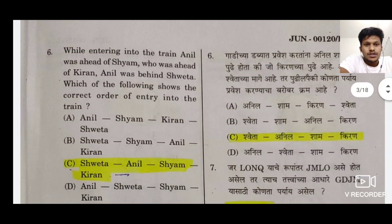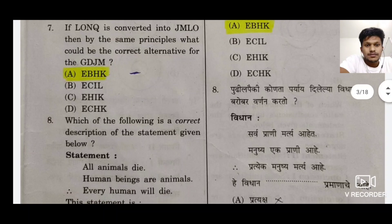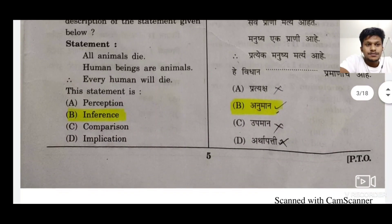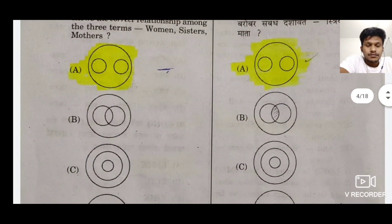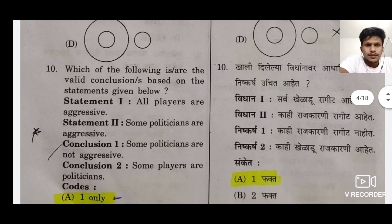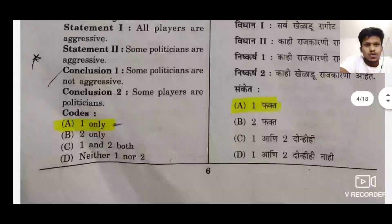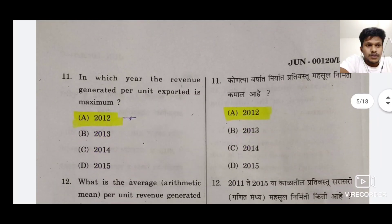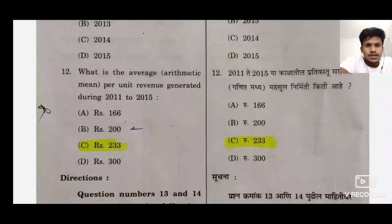The sixth answer is C. The seventh answer is C. The second answer is A — A is marked by highlighters. 8 is B, 9 is A, 10 is A. Both sides are the same, just a language difference. 11 is A, 12 is C.